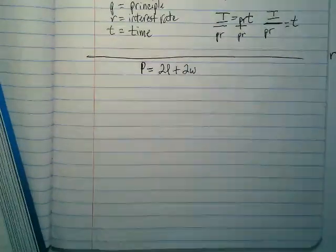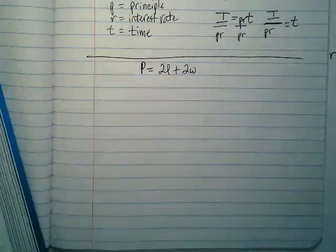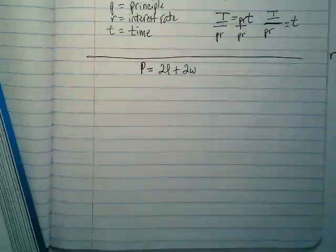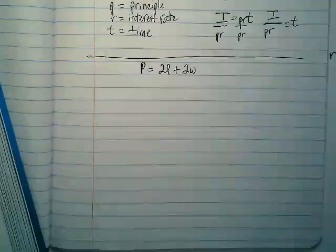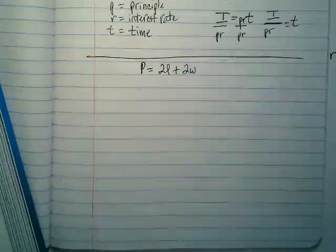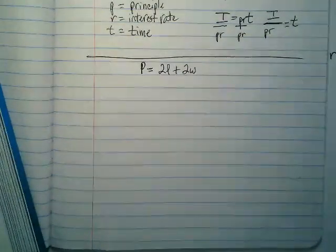And the example in our book is asking us to solve this or rewrite it in terms of W. So we want to get the W by itself instead of having right now the P being by itself.